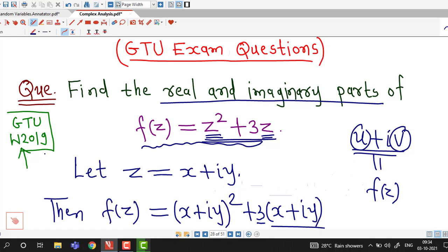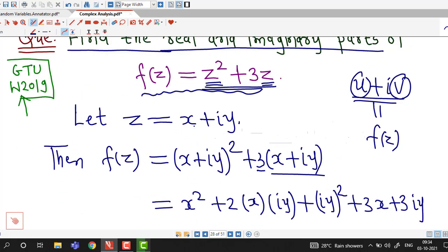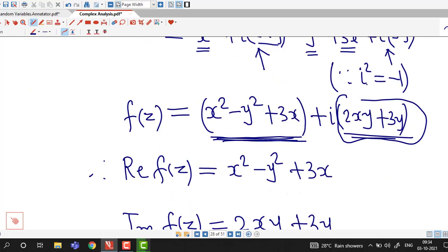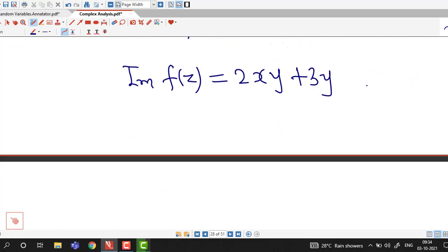This was asked in GTU winter 2019 exam. Sometimes they ask you to find out real and imaginary parts of complex functions. All you have to remember is take z equal to x plus i y in the right hand side of the given function and try to write it in this form: u plus i v. So this is all about this session. Thank you.